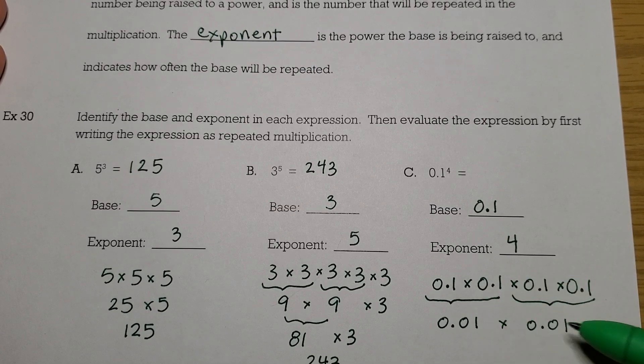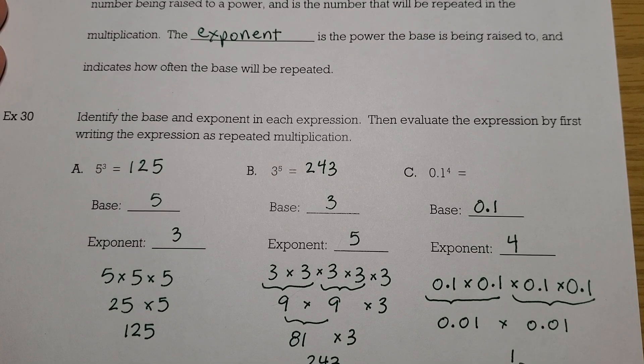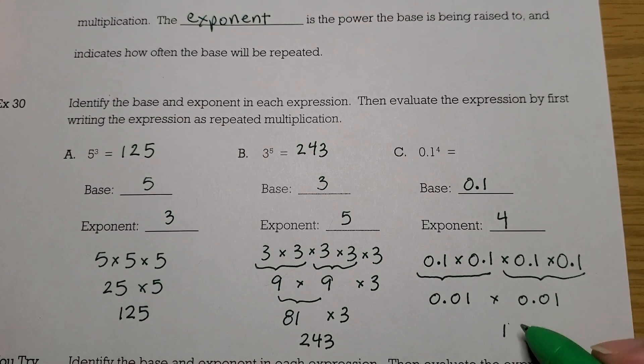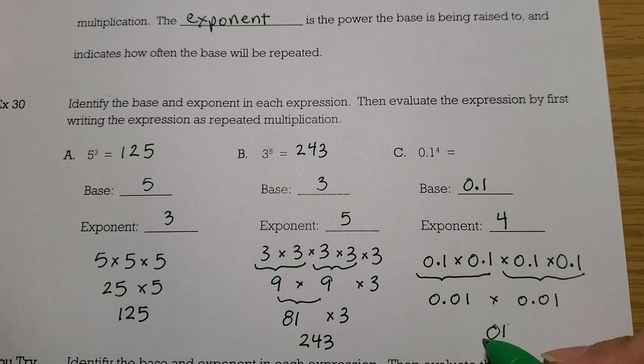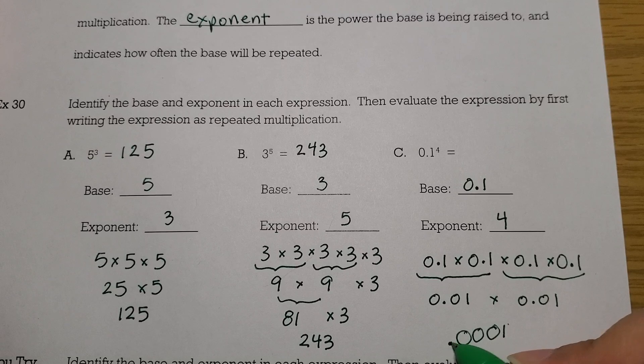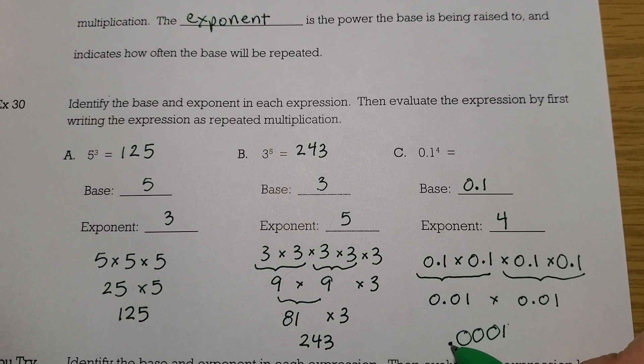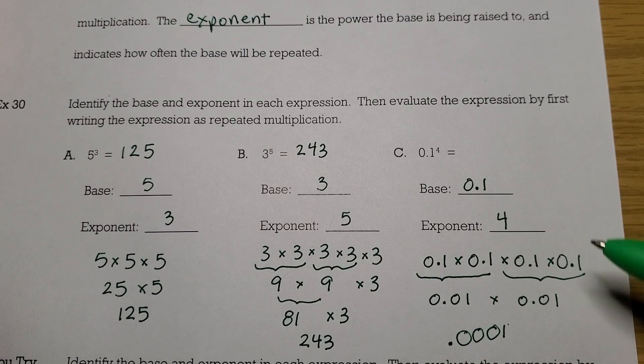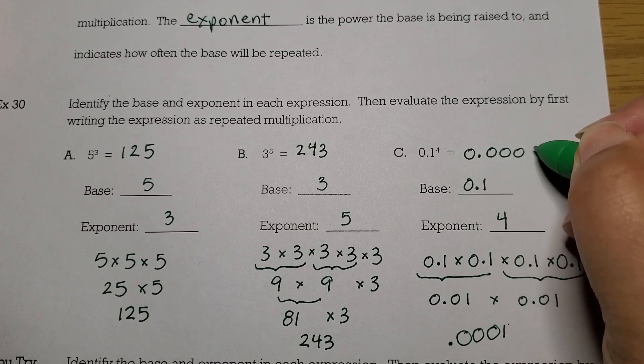So now I'm going to multiply a hundredth times a hundredth. So 1 times 1 is still 1. And then I've got 1, 2, 3, 4 zeros. So I'm going to move this invisible decimal point left 1, 2, 3, 4 places. So we started here, 1, 2, 3, 4. So 0.1 to the fourth power is going to be 0.0001.